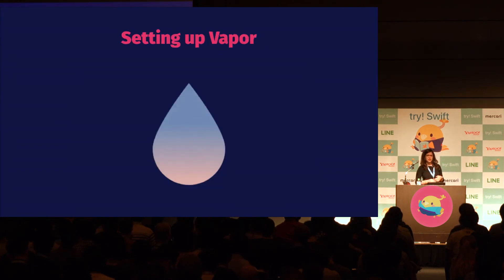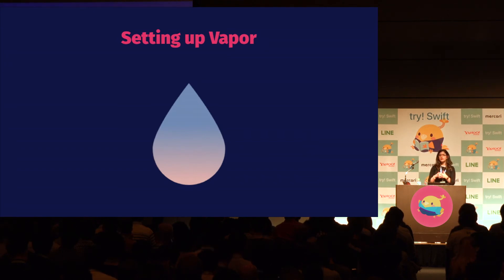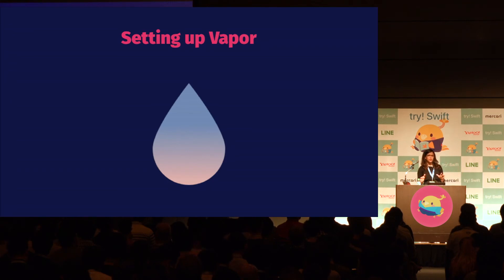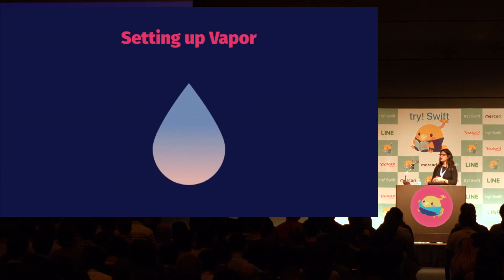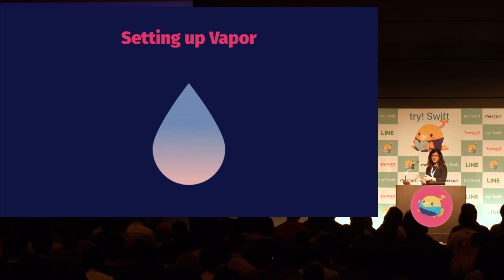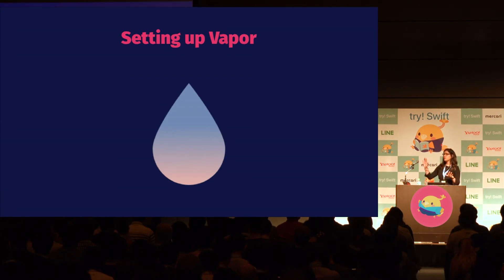For the server, I decided to use Vapor. To use Vapor, just add the repository as a dependency to the project and you can use the library. However, for those who have used Vapor before, we are not able to use the Vapor toolbox — the command-line helper for running the server and building project templates — because that requires Swift 4.1. We can still use the Vapor library itself, just not the toolbox.